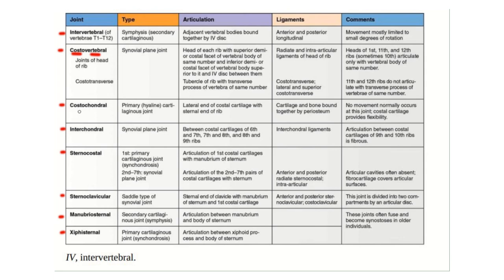The costochondral joint is between the rib and the cartilaginous part. The interchondral joint means between the cartilaginous parts of the ribs. The sternocostal joint is between the costal cartilage and the sternum. The sternoclavicular joint is between the sternum and the clavicle. The manubriosternal joint is between the manubrium and the body of sternum, and the xiphisternal joint is between the sternum and the xiphoid process.